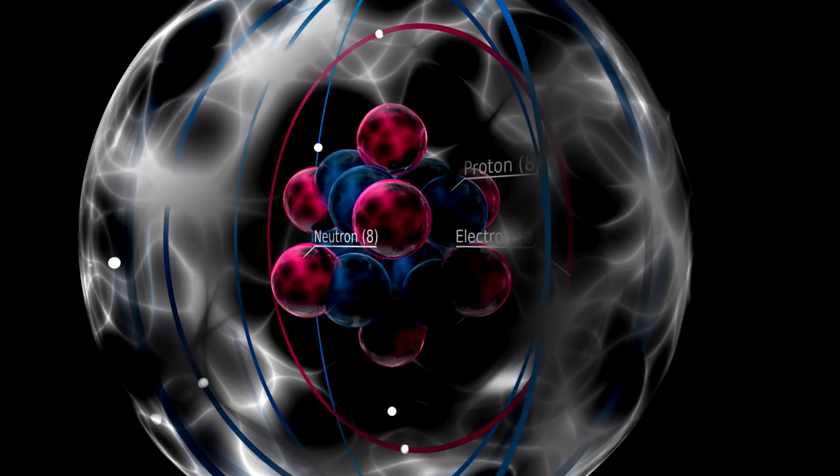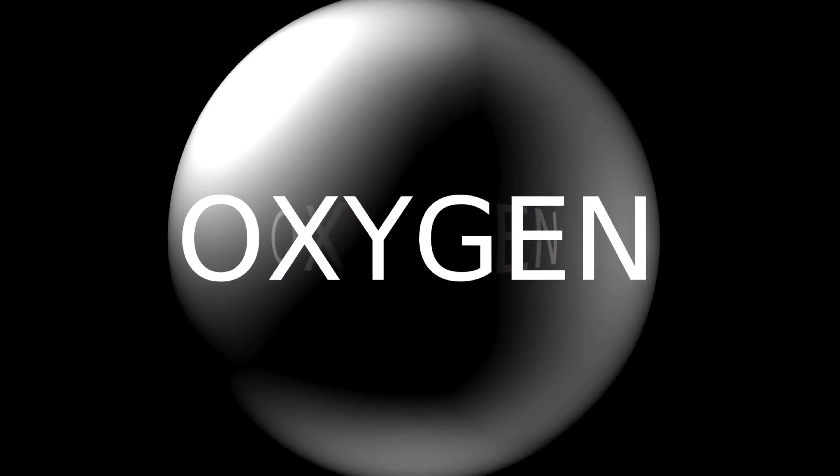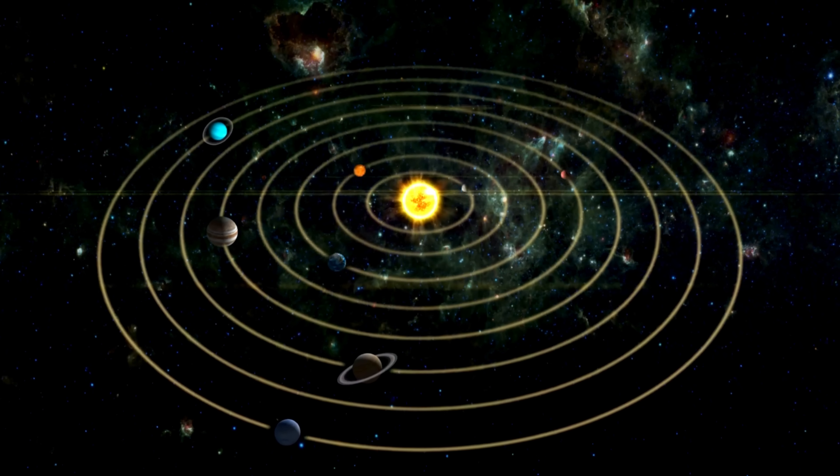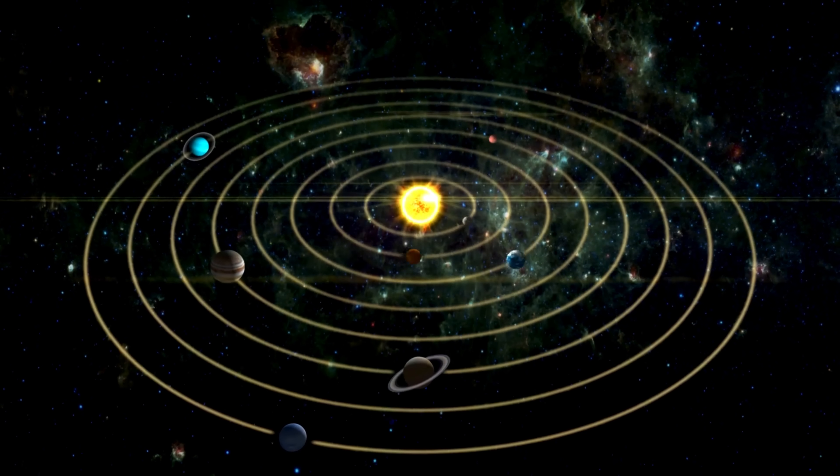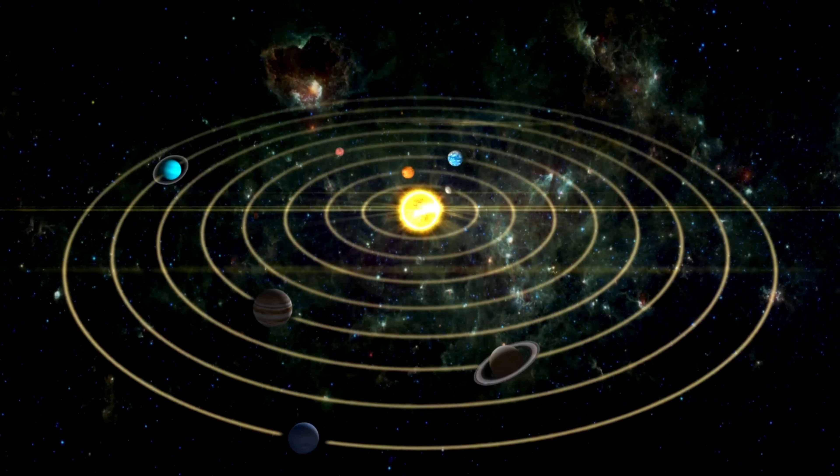Electrons, he proposed, must orbit this nucleus at a distance, much like planets orbiting the sun. This model revolutionized atomic physics, but came with a troubling flaw.